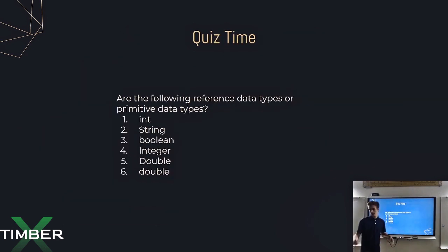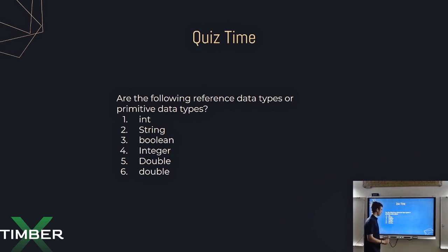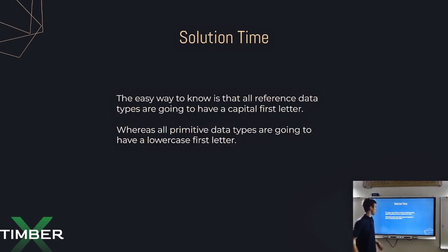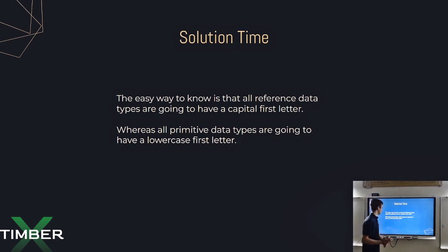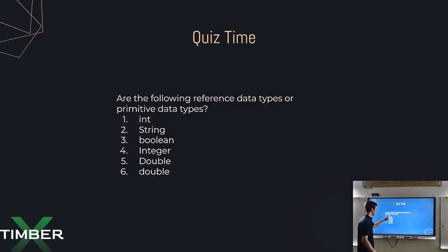First and foremost, how do we actually identify these reference data types? There's a tip for identifying whether something's a reference or a primitive data type: all primitive data types are going to have a lowercase letter first, and all reference data types are going to have an uppercase letter. So going back to this, this would be a primitive, this would be a reference, this would be primitive, this would be a reference, a reference, and then primitive.